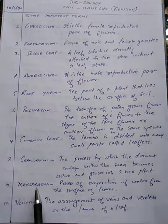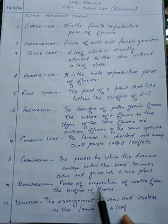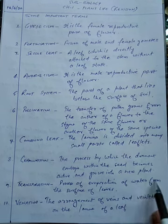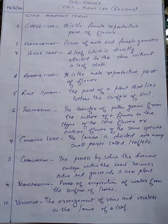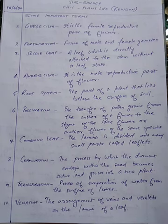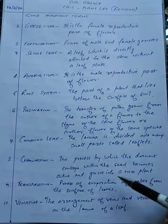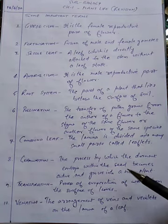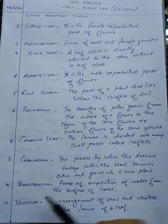The ninth term is transpiration. It is the process of evaporation of water from the surface of leaves. Due to heat and high temperature, the water from the surface of leaves gets evaporated in the form of water vapor, and this process is known as transpiration.